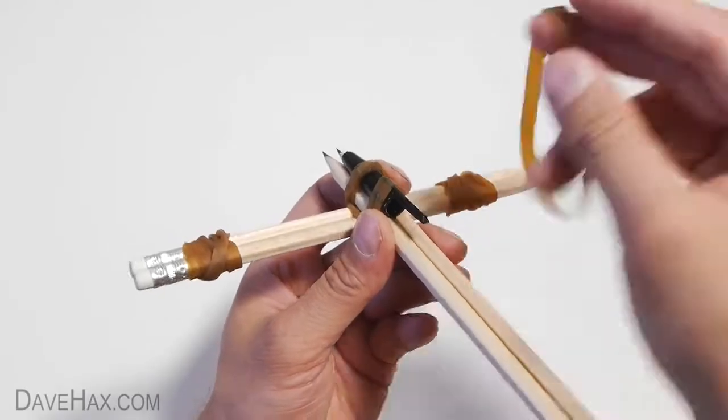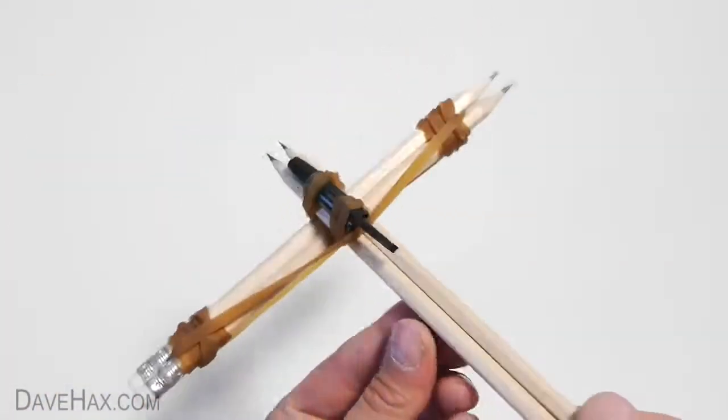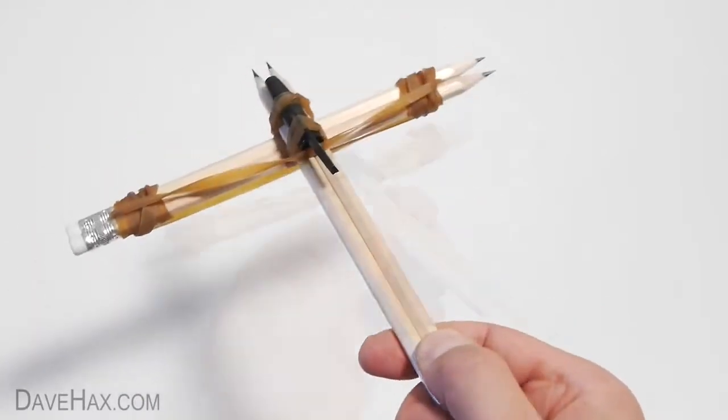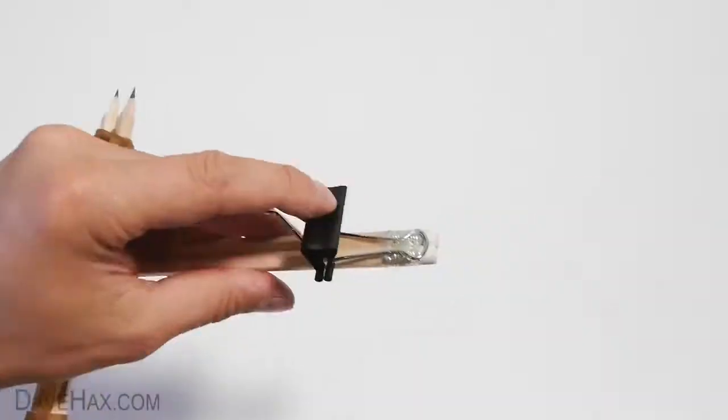Now take another elastic band and fix it between the arms. If you want, you can start using it like this. But I'm going to add a binder clip to use as a trigger and we're going to hold this in place using strips of tape.